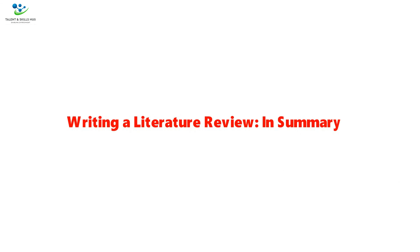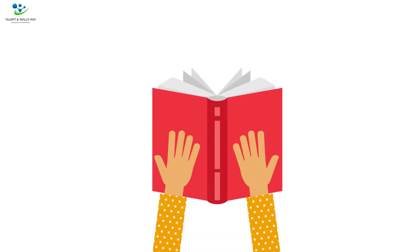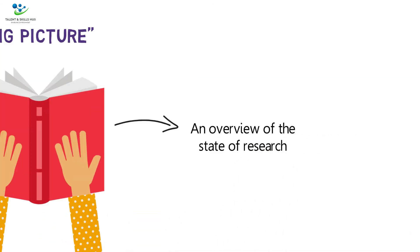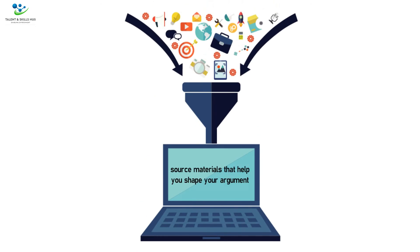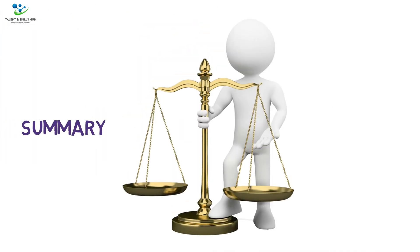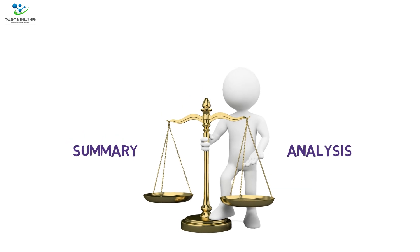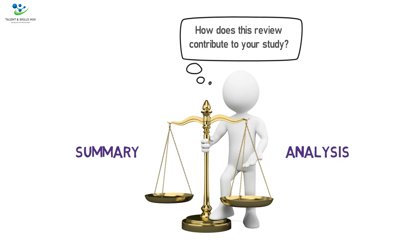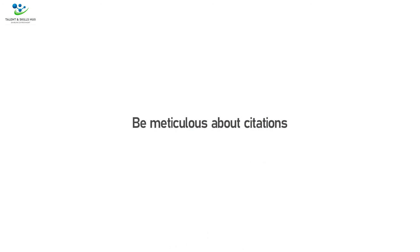Writing a literature review — in summary: as you read, try to see the big picture. Your literature review should provide an overview of the state of research. Include only those source materials that help you shape your argument. Resist the temptation to include everything you've read. Balance summary and analysis as you write. Keep in mind your purpose for writing: how will this review benefit readers? How does this review contribute to your study? Be meticulous about citations.